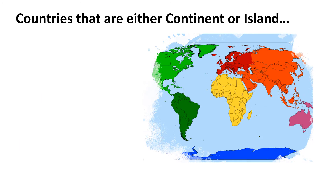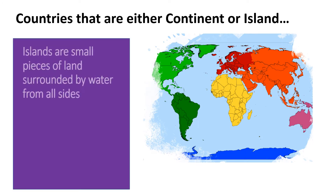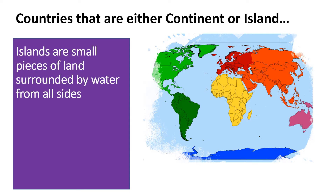What is an island? An island is a large piece of subcontinental land which is surrounded by water on all sides. Very small islands formed on emerged lands are called islets or skerries.